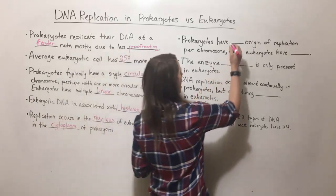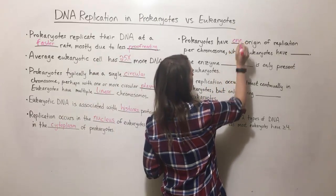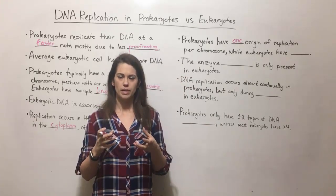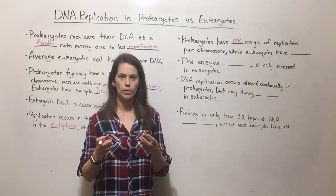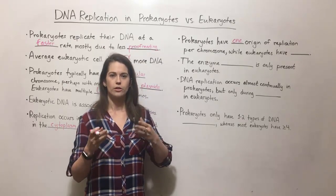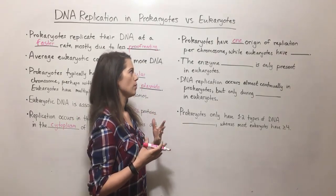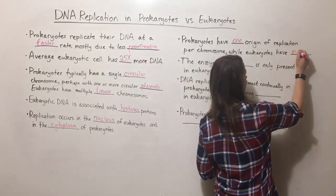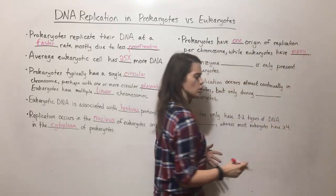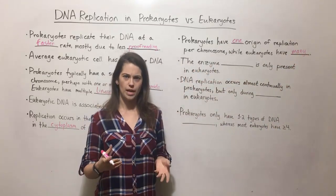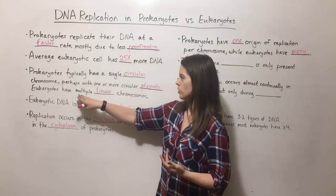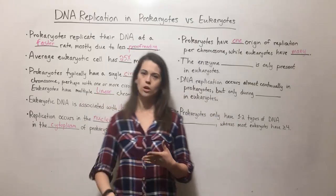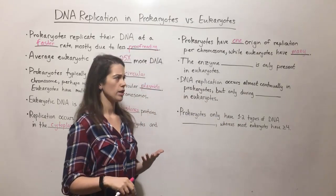Prokaryotes also have one origin of replication. The origin of replication is literally where replication begins on the chromosome — the point where the replication process starts — and there's just one per circular chromosome in prokaryotes. However, eukaryotes tend to have many origins of replication per chromosome. And remember that eukaryotes already have multiple chromosomes, so there are quite a lot of places where replication starts.